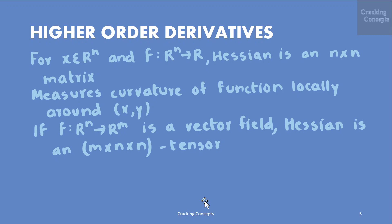The Hessian measures the curvature of the function locally around the point (x, y). If f is a mapping from n-dimensional to m-dimensional space and is a vector field, then the Hessian is an m×n×n tensor.